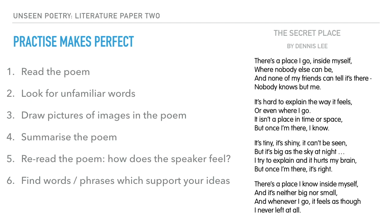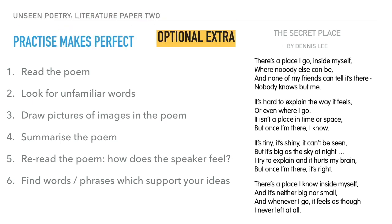A final optional activity, if you've completed everything with time to spare, is to practise those same six steps on a second poem. The second poem is called 'The Secret Place' by Dennis Lee, and it's actually a really nice poem. Even if you don't want to spend a lot of time analysing it, just practising reading poetry is really beneficial for developing the skills needed for this unseen poetry unit. Read it through looking for unfamiliar words, draw pictures of images, summarise the poem, and ask yourself how the speaker feels. This is optional extra practice for the skills needed in the unseen unit.